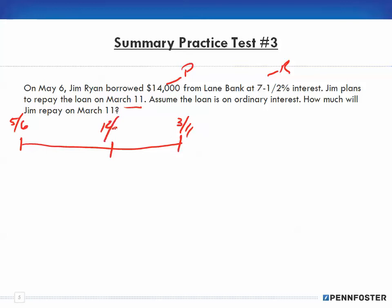If we draw a timeline here, this is May 6th and this is March 11th, so this goes through the end of the year December 31st. That's going to help us when we're looking at the Julian calendar to figure out how many days between May 6th and March 11th. Assume the loan is on ordinary interest which is 360, and how much will Jim repay on March 11th?